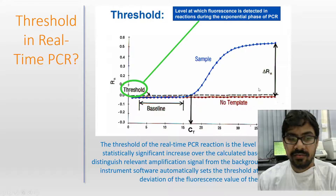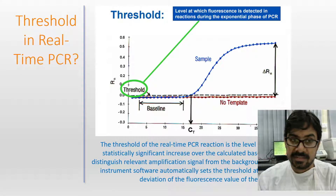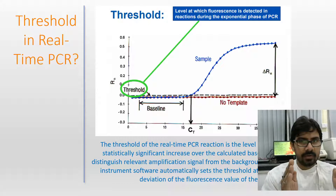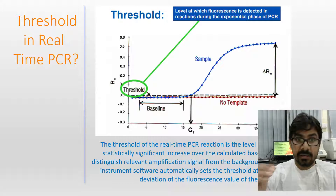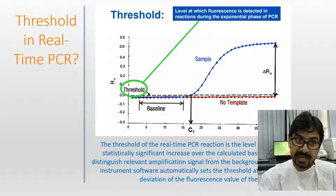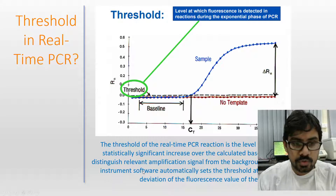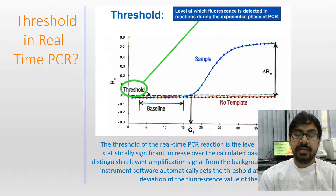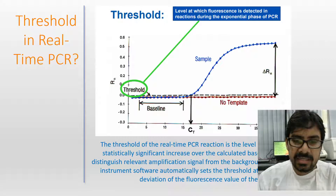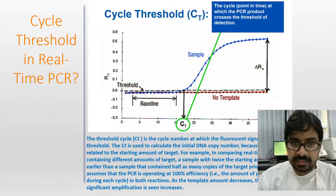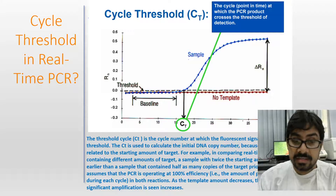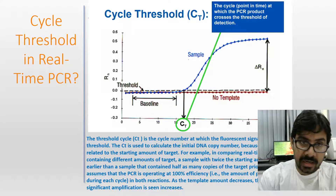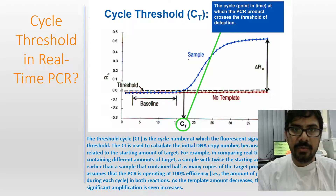The threshold in real-time PCR is the level of signal that reflects a statistically significant increase over the calculated baseline signal. It means amplification has started but hasn't yet reached a significant level — once it crosses that significant level, the Ct comes into picture. The real-time PCR instrument software automatically sets the threshold — you can adjust it after getting results — typically at 10 times the standard deviation of the fluorescence value.